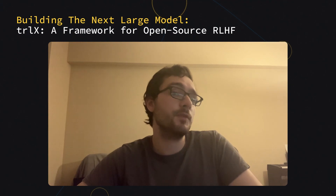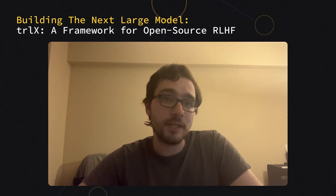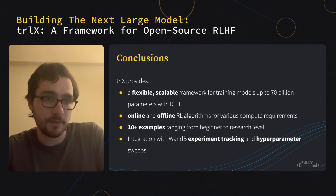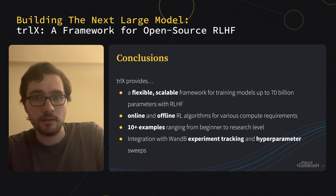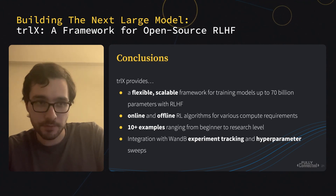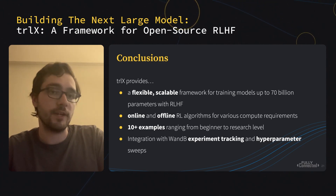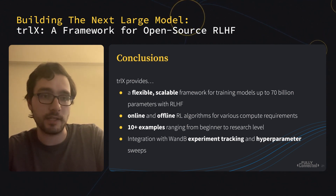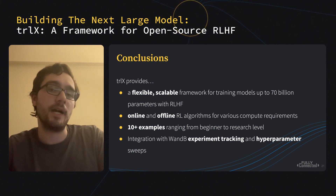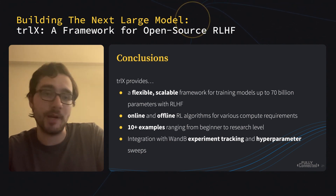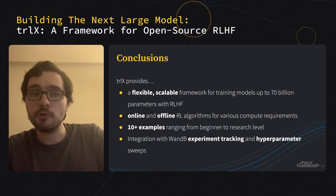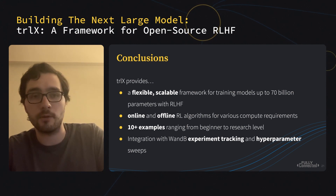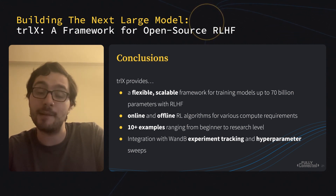In conclusion, TRLX provides a scalable, flexible framework for training models up to 70 billion parameters with reinforcement learning — an online and an offline trainer for various use cases in different scenarios, 10 plus examples of varying complexity ranging from beginner to research level which users can get started with and plug into, and integration with Weights and Biases for experiment tracking and hyperparameter sweeps, which are crucial for reinforcement learning since hyperparameters are quite finicky and a thorough search is needed to get maximum performance.